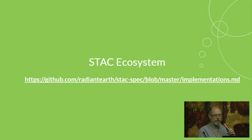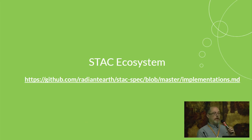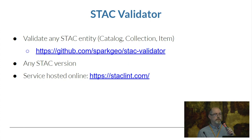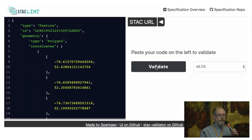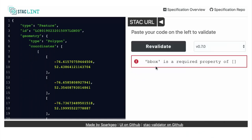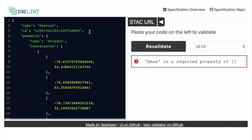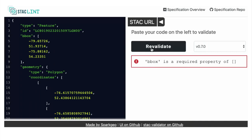Now I'll go over the Stack ecosystem — the software tools that have risen out of it. Perhaps the most important one is done by our friends at Spark Geo: the Stack validator. It's a spec, so you need a way to validate the metadata. There is a library for this, and there's also a website, stacklint.com, where you can drop in your metadata and validate it for any version of Stack.